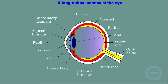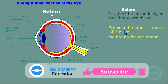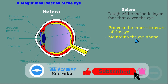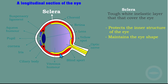First of all, let me start with the sclera. The sclera is a tough white inelastic layer that covers the eye. This white part here is called the sclera. The functions of the sclera: it protects the inner structures of the eye, and it maintains the eye shape.